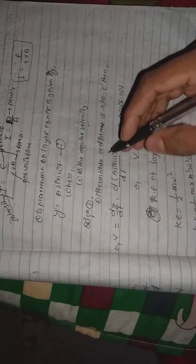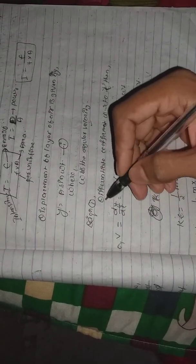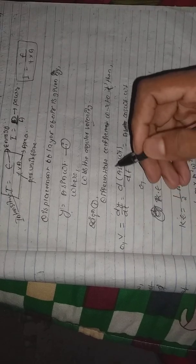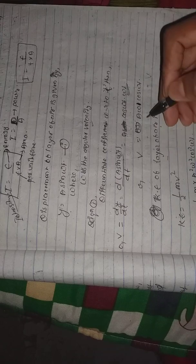This is equation one. When we differentiate with respect to time, then distance over time is velocity. Differentiating, the derivative of sine omega t is cosine omega t. So v equals A omega cos omega t.